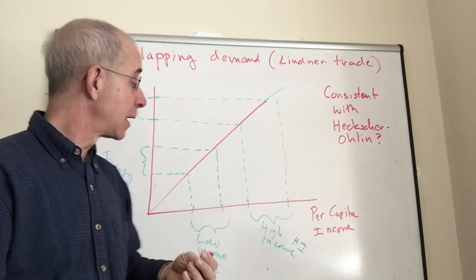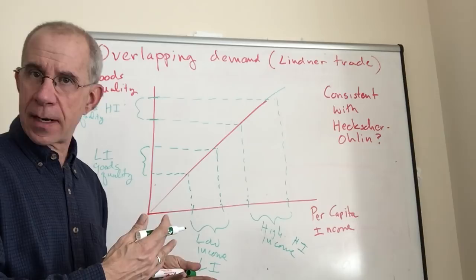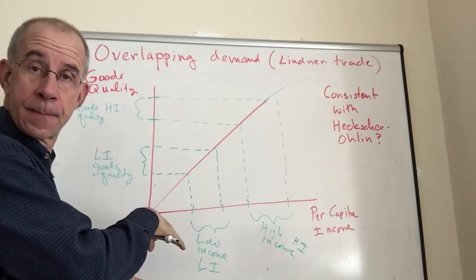The things that the low income country produces are not the kinds of things that the high income country consumers want to buy. So there's no overlapping demand. There's no real reason for the countries to trade with each other if the product quality is related to income as this is depicted.